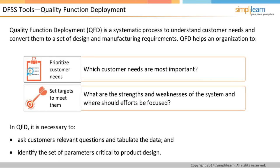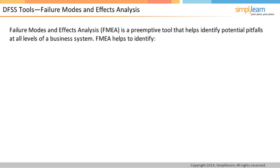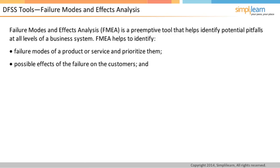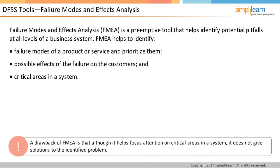Failure Modes and Effects Analysis, or FMEA, is a pre-emptive tool that helps any system identify potential pitfalls at all levels of a business system. It helps the organization identify and prioritize different failure modes of its product or service and understand what effect the failure would have on the customer. It helps in identifying critical areas in a system on which the organization's efforts can be focused. Note that while FMEA enables identification of critical areas, it does not offer solutions to the identified problems.